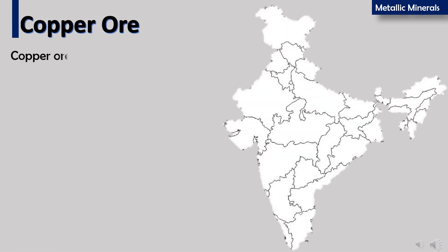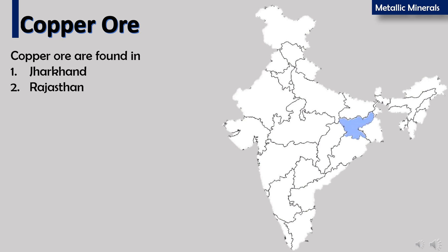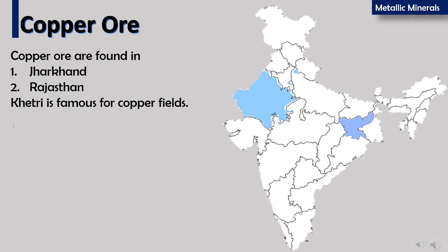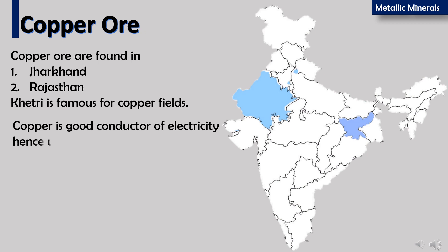Copper ore is found in Jharkhand and Rajasthan. Khetri is famous for copper fields in Rajasthan. Copper is a good conductor of electricity and hence is used in electrical appliances.